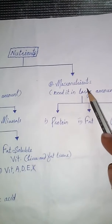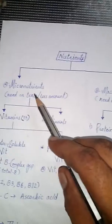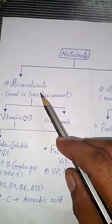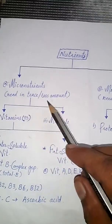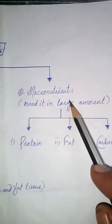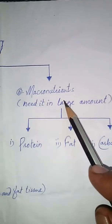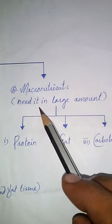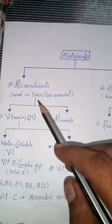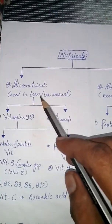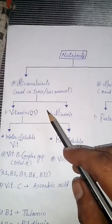Micronutrients and macronutrients. Micronutrients are the type of nutrients which our body needs in a trace or in a less amount, while the macronutrients are those type of nutrients which our body needs in a large amount. So these micronutrients are further divided into two types.